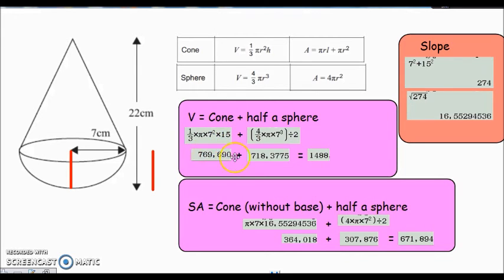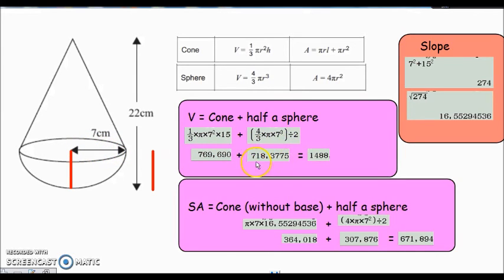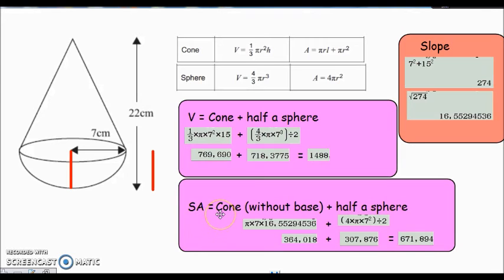That gives the volume of the cone. For the hemisphere, I use the full sphere volume formula — four thirds times pi times radius cubed, with radius 7 — then divide by two. Adding the two volumes together gives the total volume of the entire shape.